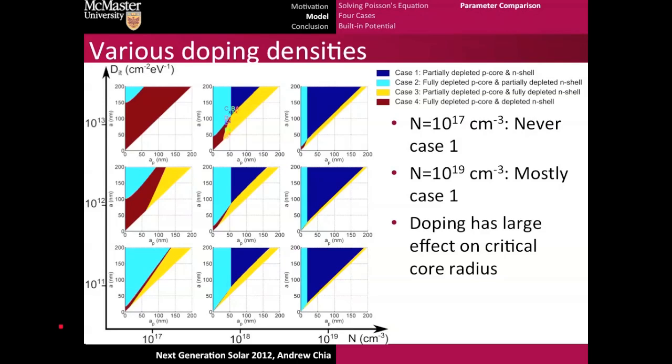For example, at 10 to the 18, our critical core radius was 52 nanometers, but when you increase the doping, that's reduced to 25 nanometers. So now you can grow an even thinner nanowire because of the higher doping.